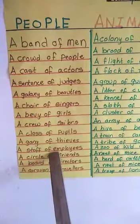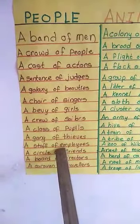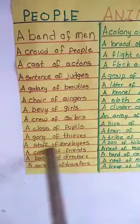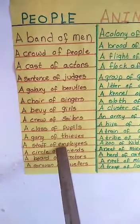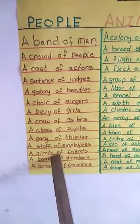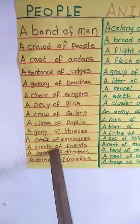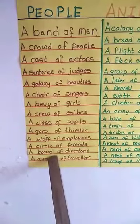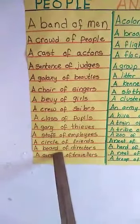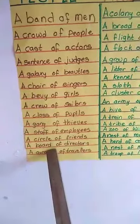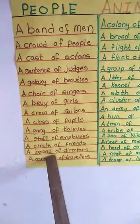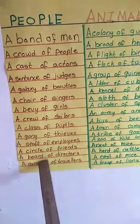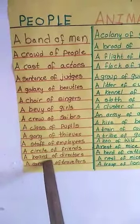A staff of employees is subject to those working in institutions, companies, and schools. People working in these fields are called a staff of employees. A circle of friends: everybody has a few good friends and those friends become a circle, so we call them a circle of friends. A board of directors: in any company, management, institution, or school, we have a management — like in our school, the managing directors or the board of directors.